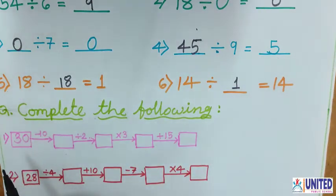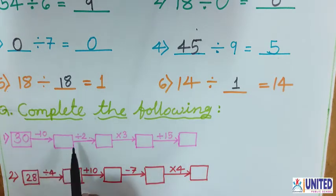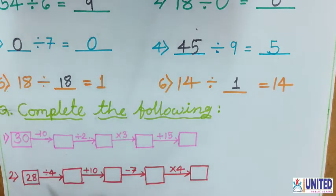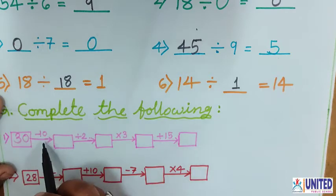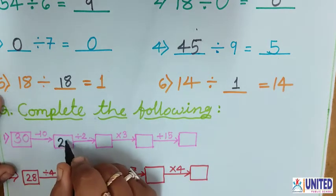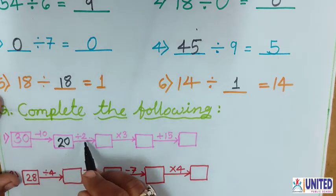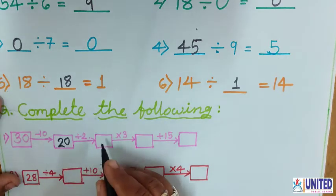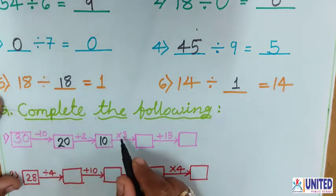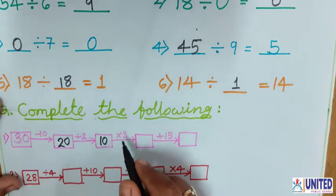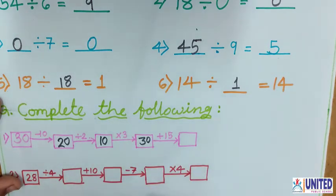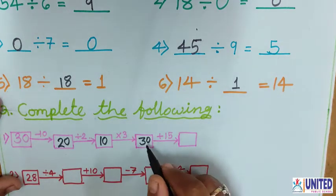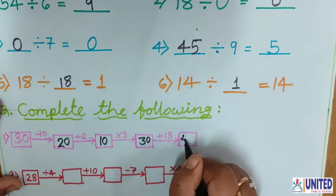Complete the following. Here you can see some boxes are to be filled, and 4 operations are given: subtraction, division, multiplication, and addition. By using these operations, you have to solve this activity. First number given is 30. Step: minus 10 — so 30 minus 10 is 20. Then divide by 2 — 2 tens are 20, so the answer is 10. Then 10 multiplied by 3 — 10 threes are 30. Then 30 plus 15 — the answer is 45.